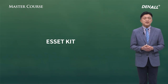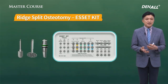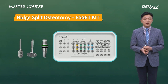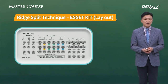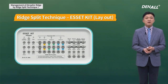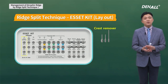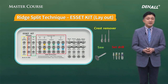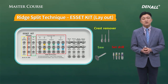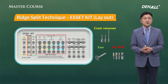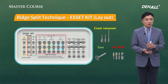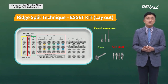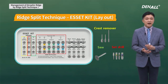Let's look at the asset kit. The asset kit components are straightforward. There is a crest remover for alveoloplasty, a saw for osteotomy, and set drills for osteotomy. These three components are used in sequence: alveoloplasty is done using the crest remover, a saw is used for creating osteotomy, and the set drill splits the ridge.